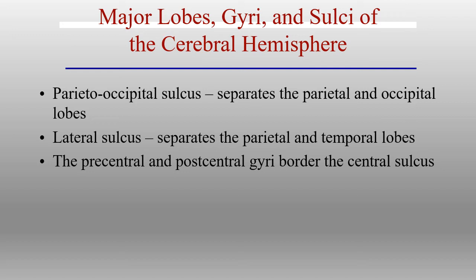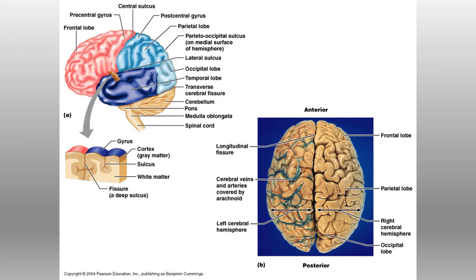Other sulci include the parietal-occipital sulcus, somewhat difficult to see on models, and the lateral sulcus, relatively easy to find. The pre- and post-central gyri are on either side of the central sulcus. The central sulcus makes its way all the way down to the lateral sulcus. The pre-central gyrus houses motor information, and the post-central gyrus houses sensory information.